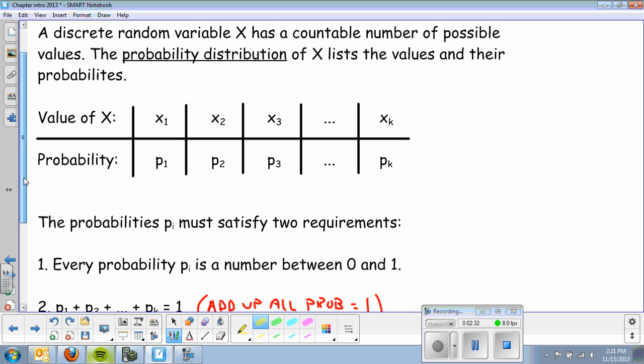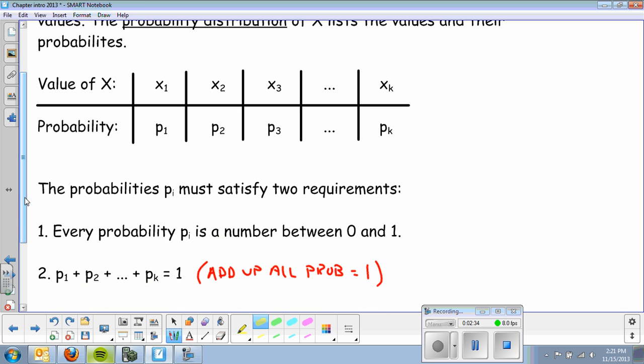Okay, there's two requirements that must be true in these discrete random probability distributions. Every probability, p sub i, is a number between 0 and 1. That's a reoccurring fact. We should already know that. And all of the probabilities should add up to 1. So, if I add these all together, they should add up to 1. Again, that's a review of the last chapter.